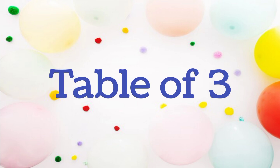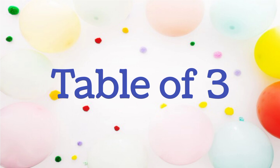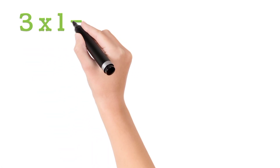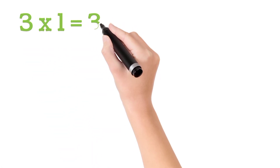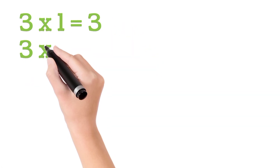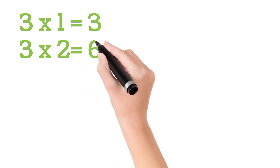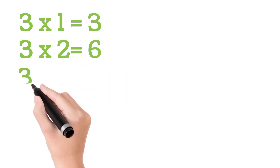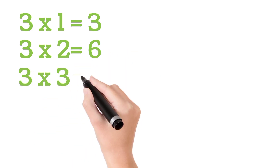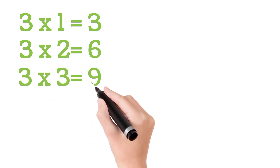Table of Three. Three One's a Three. Three Two's a Six. Three Three's a Nine.